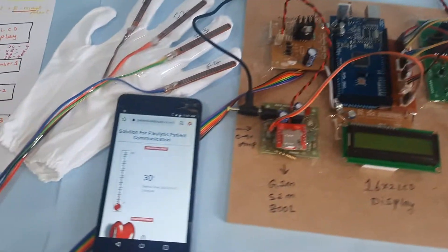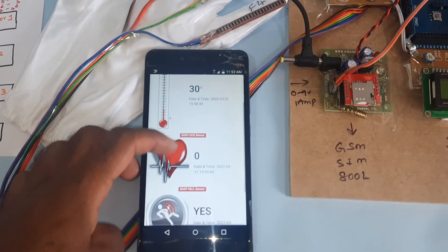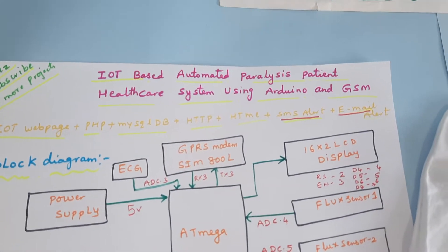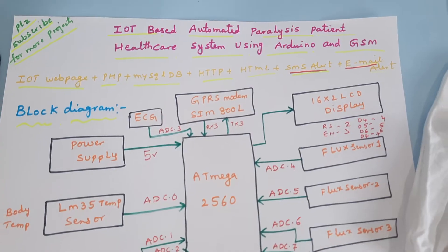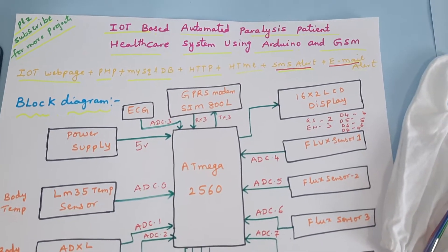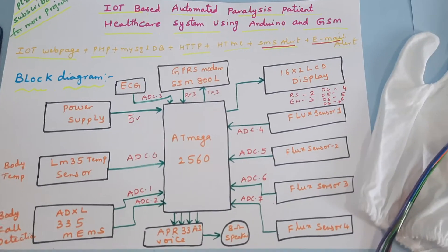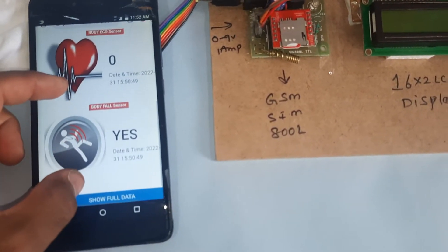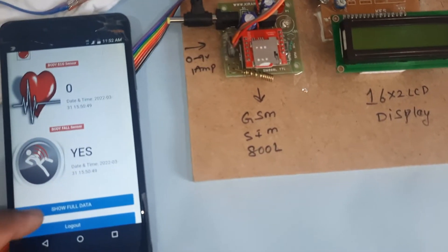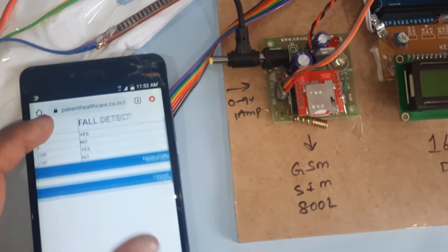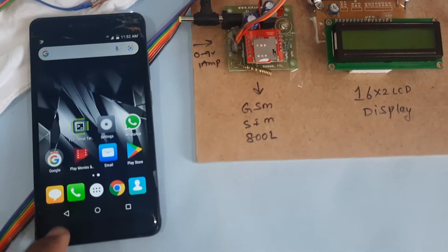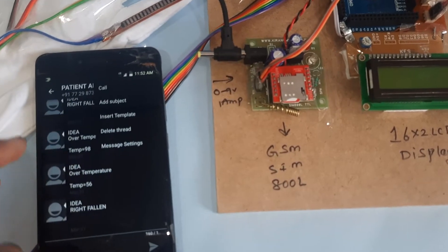Hi, we are from SVS Embedded. The project title is IoT-Based Automated Paralysis Patient Healthcare System. We are using an Arduino and GSM/GPRS modem. We have one IoT webpage showing temperature, patient fault detection monitoring, and ECG.